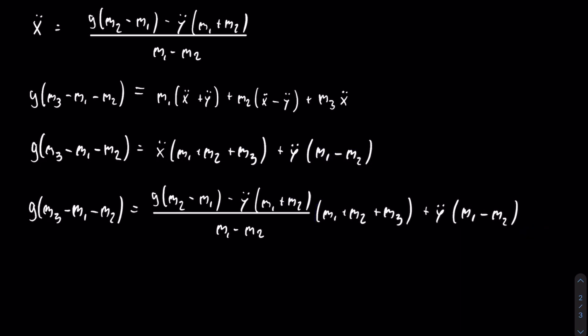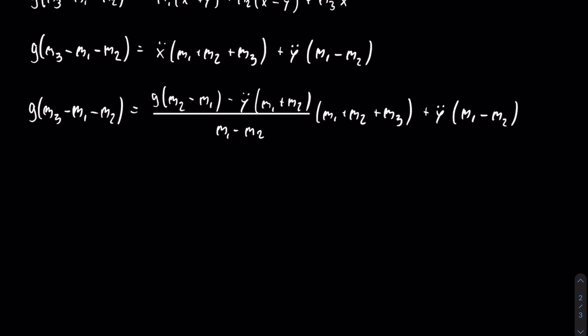Now to make it easier to eventually factor out the y double dot from the entire right side, I can distribute the terms on the right side of the equation. So first thing I could do is distribute the m1 plus m2 plus m3 divided by m1 minus m2 on both of those terms.